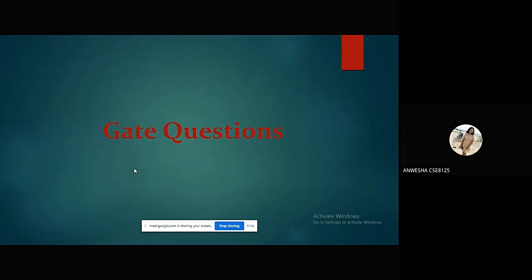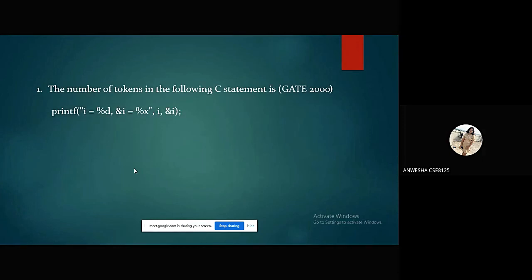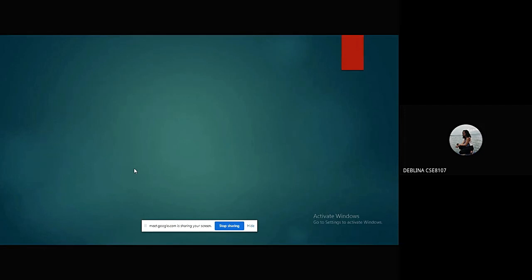Then here we have the gate questions. The first two questions will be read by Deblina. Thank you, Anvisha. So here we have our first question, which reads as: the number of tokens in the following C statement is printf, and here we can see which the statements are. And the options are as follows: option A, 3; option B, 26; option C, 10; and option D, 21. And the answer is option C.